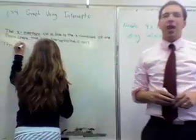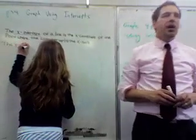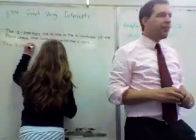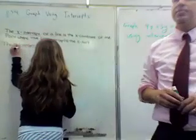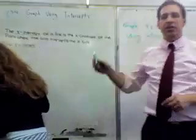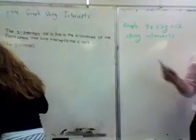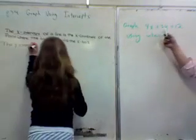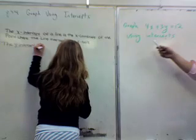This is page 314, graphing using intercepts. Hannah's just going to write on the board what the definition of an x-intercept and a y-intercept is. Until that time, let's look at this question over here. And it says, graph 4x plus 3y equals 12 using intercepts.